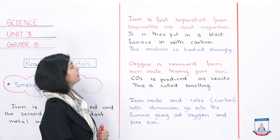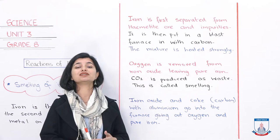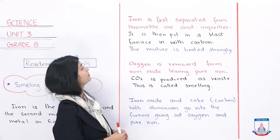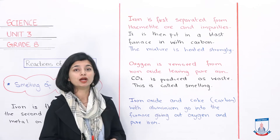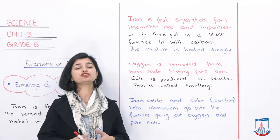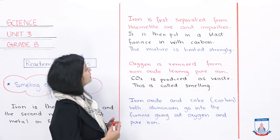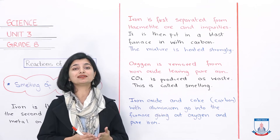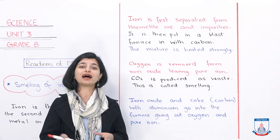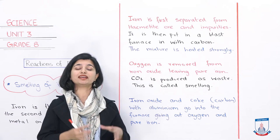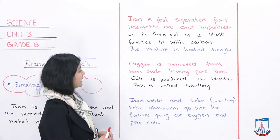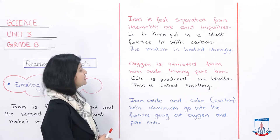Iron is first separated from hematite ore and impurities. The iron in hematite ore comes with impurities in step one. It is then put into a blast furnace with carbon. The temperature in the furnace is very high, so iron and oxygen are separated. The mixture is heated strongly. Hematite mainly contains iron oxide; the other impurities of hematite are removed. In the blast furnace, we add carbon and expose the mixture to high temperature. Oxygen is removed from iron oxide, leaving pure iron. CO2 is produced as waste. This is called smelting.